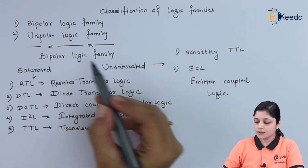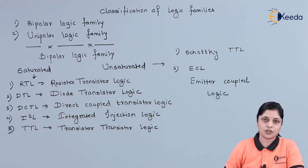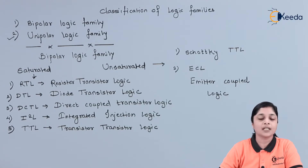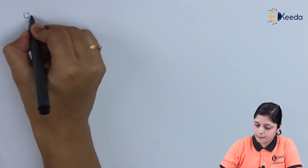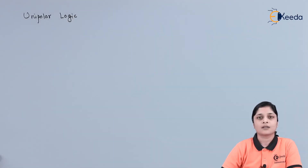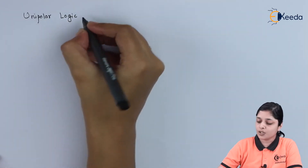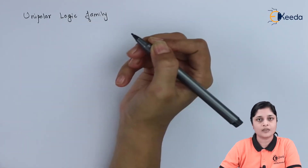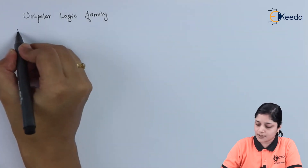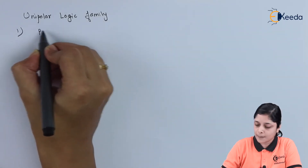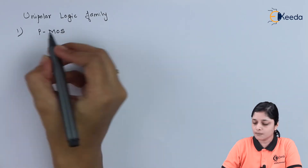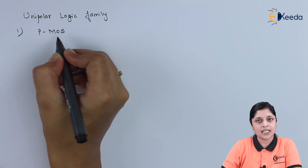This is all about the classification of bipolar logic families. Now we will see the unipolar logic family classification. In unipolar logic family, the first type is PMOS, which means P-channel MOSFET.